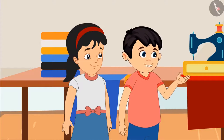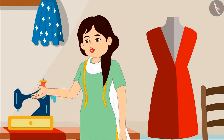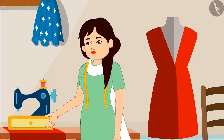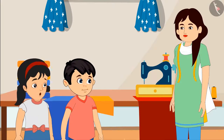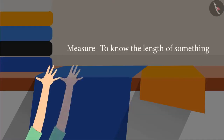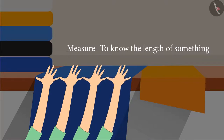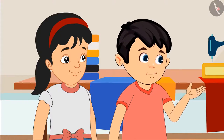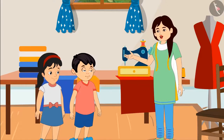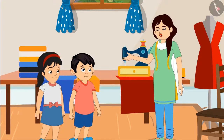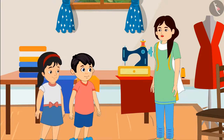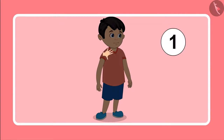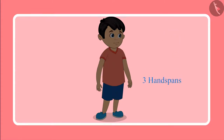Aunty, what are you doing with your hand? My dear, I am taking the measurements. Aunty, what is our measurement? Children, we measure to know the length of something. Aunty, how do we measure? Look Chotu, I took the measurement of the length of your shirt with my hand like this — one, two, and three. Your shirt is three hand spans long.